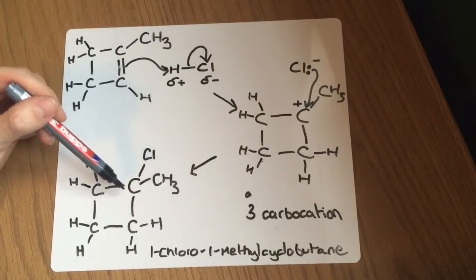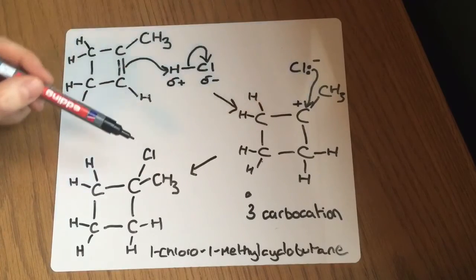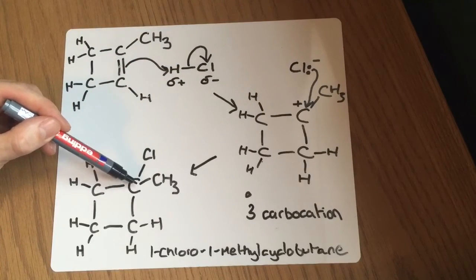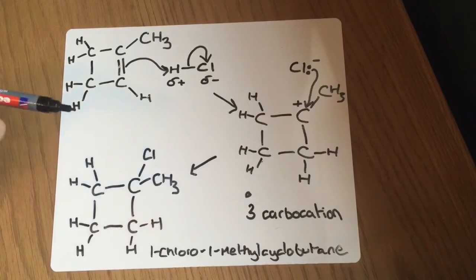We can see that reflected here in the final product. All the activity around this carbon from our intermediate now shows the Cl bonded, and our name for our major product is 1-chloro-1-methyl-cyclobutane.